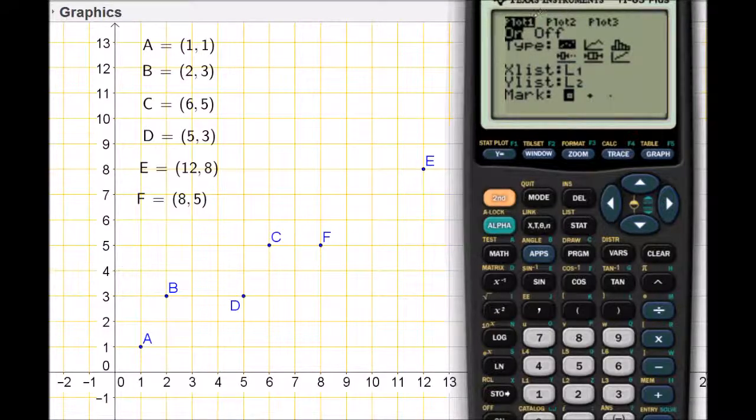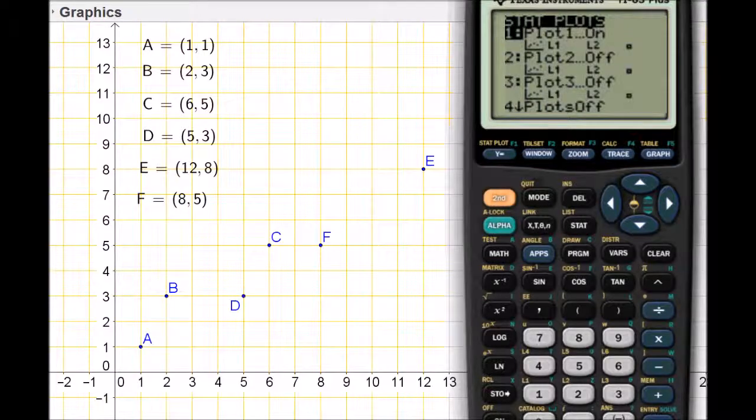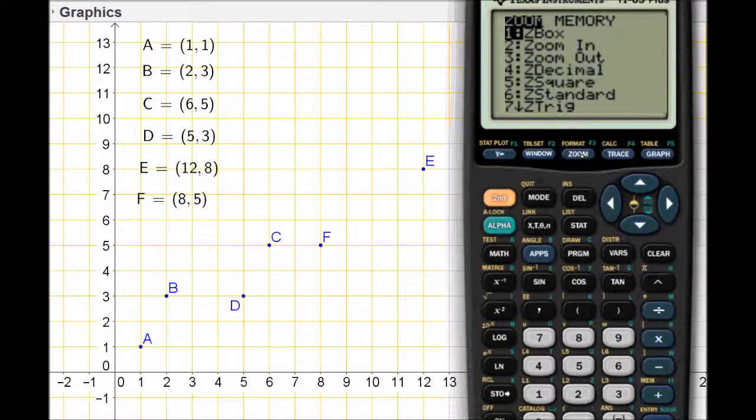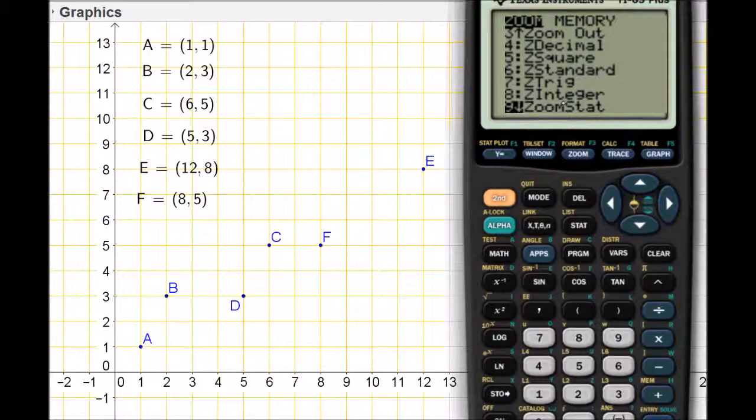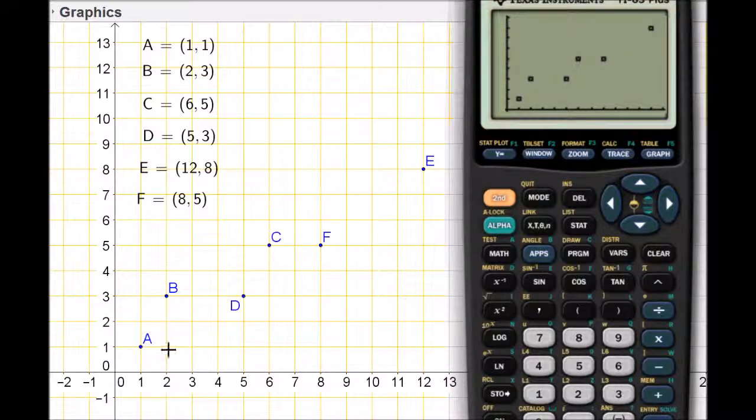Now that the stats plot is turned on, I like to zoom my window so it will display this data in an appropriate window. I'm going to press zoom, and option number 9 is zoom statistics. The calculator will look at all the data points we've given it and create a window that will best fit all those points. I'll hit enter, and you can see it plots the points with the same relationship on the calculator screen.